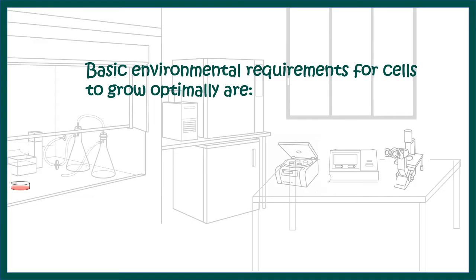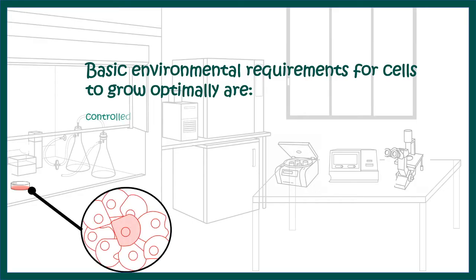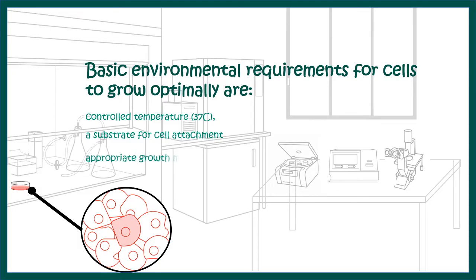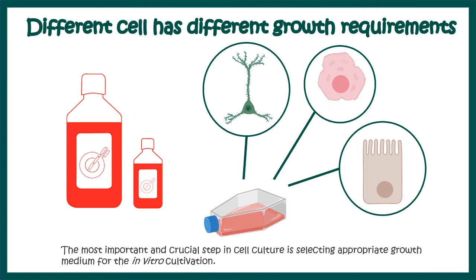Let us review the requirements of a cell to grow optimally in a culture condition. Cells need a controlled temperature of 37°C, provided by the cell culture incubator, because that is the temperature cells need inside our body. They also need a substratum for attachment — especially epithelial cells, which require a basement membrane equivalent. Appropriate growth medium with growth factors is required, and the incubator maintains the pH and osmolarity of the media.